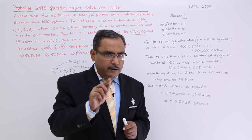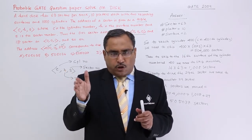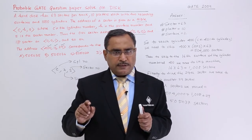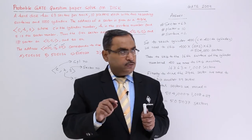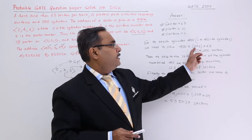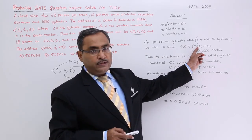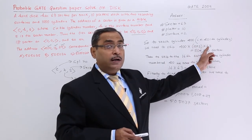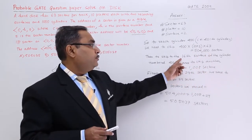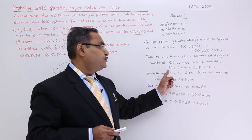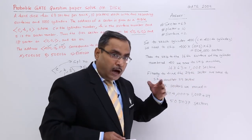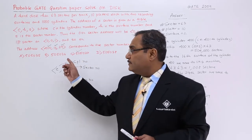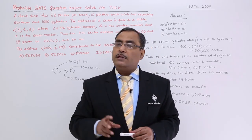When coming to the 400th cylinder, we are crossing 401 cylinders. We have 10 platters and 2 surfaces, so per surface we get 63 sectors. Thus 10 × 2 gives the number of tracks per cylinder, and per track we have 63 sectors — that is the number of sectors crossed for one cylinder. For 400 cylinders, multiply accordingly. Then going to the 16th surface of the cylinder, skip another 16 × 63. Finally, add 29 for the 29th sector. That is the way to calculate the value. If such address-related calculation problems come, you should solve them in this way.